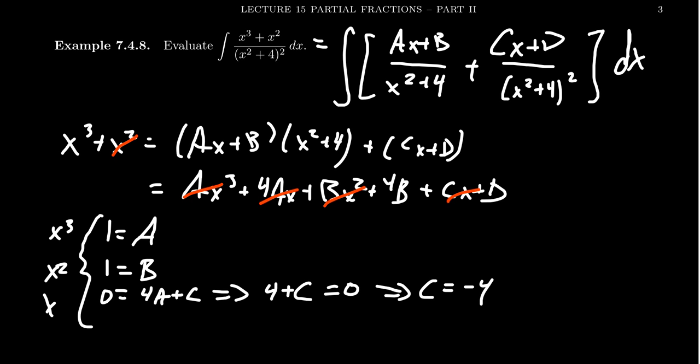Finally, looking at the constant term: the left-hand side doesn't have a constant, so it's 0. On the right-hand side we have 4b plus d. So 0 equals 4b plus d, and since b is 1, this tells us d equals negative 4. So even though we had a linear system with 4 equations and 4 unknowns, we solved it very quickly and got a=1, b=1, c=−4, d=−4.